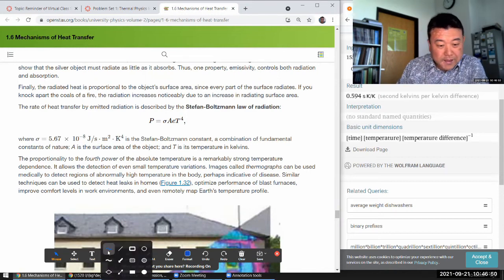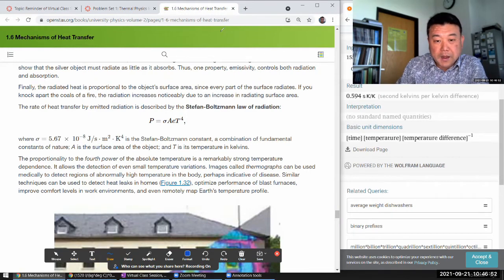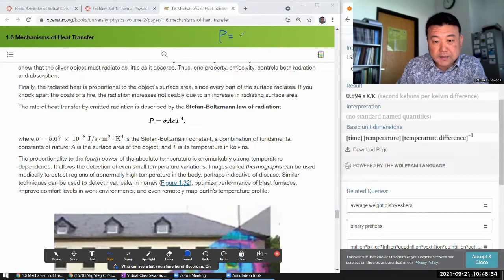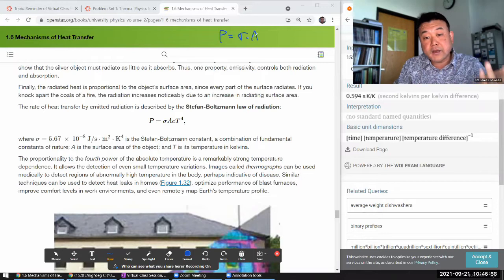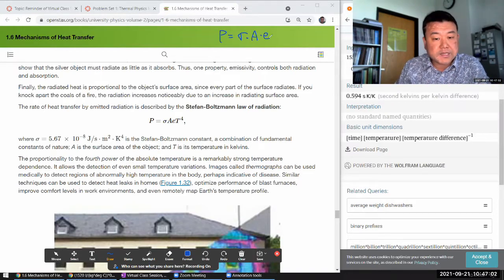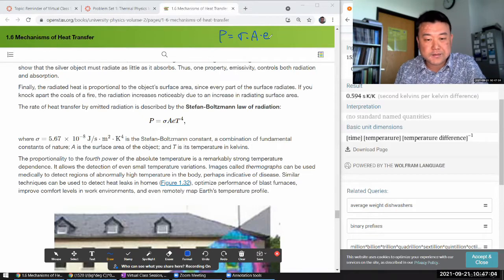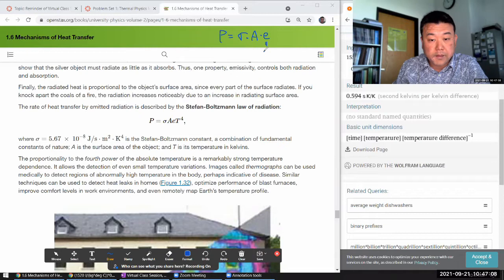Let me just copy it down here so that I have access to it. The power emitted is Stefan-Boltzmann constant times the area of the black body. And this E is the emissivity. Oh, I guess this is more general than black body. For a black body, this E is equal to one. And this is the important part, temperature to the fourth power.